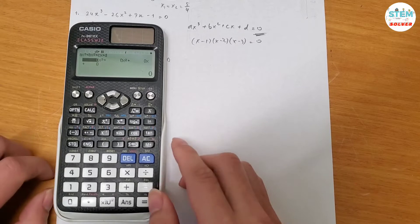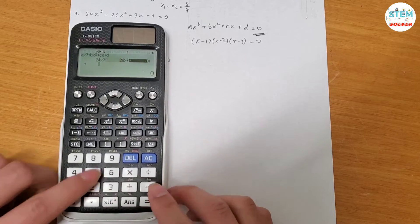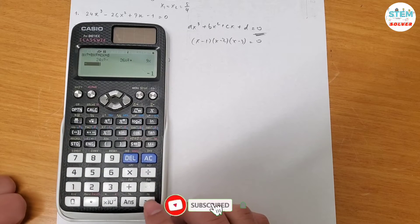Alright, now let's type in the coefficient. So x cubed, I have 24, then minus 26, 9, negative 1, and then hit the equal sign.